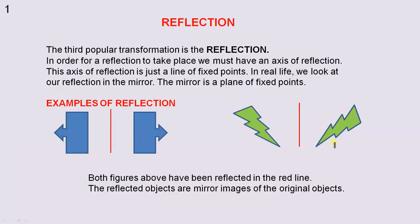The third popular transformation is the reflection. In order for a reflection to take place, we must have an axis of reflection. This axis of reflection is just a line of fixed points. In real life, we look at our reflection in the mirror. The mirror is a plane of fixed points.